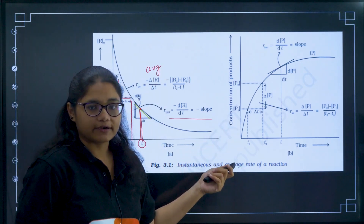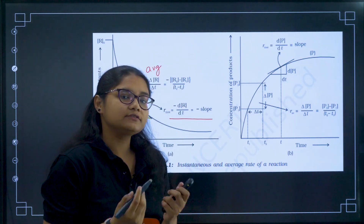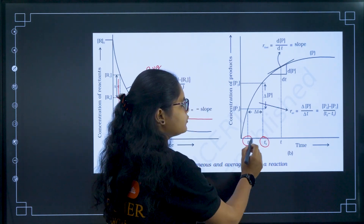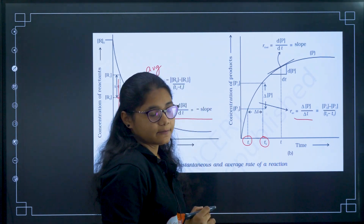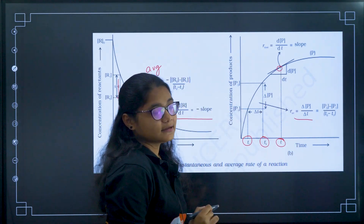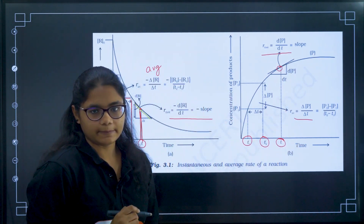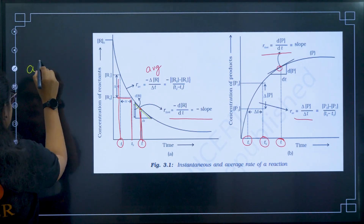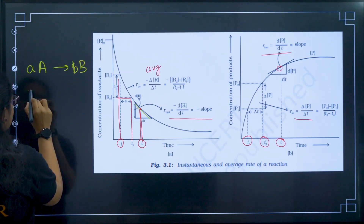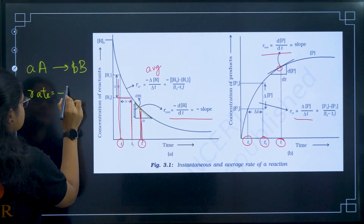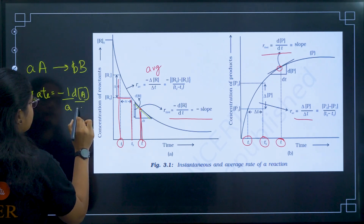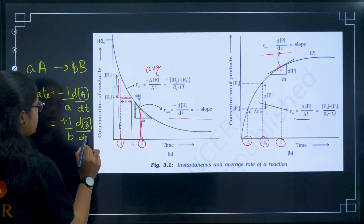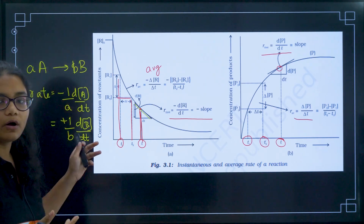For products, concentration increases with time, so here also we can calculate two types of rate: instantaneous rate and average rate. For average rate, two time slots are selected; in that period we calculate the rate. For instantaneous rate at any particular instant T, it is dP/dt. Now, for how to write the differential rate equation: if A gives B, rate = −(1/A)(dA/dt) = +(1/B)(dB/dt). Numericals are asked from this.